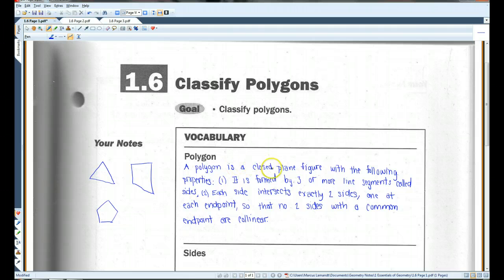A polygon is a closed plane figure with the following properties. It is formed by three or more line segments called sides. So here are some examples. This is a triangle. This is a quadrilateral. A pentagon over here.